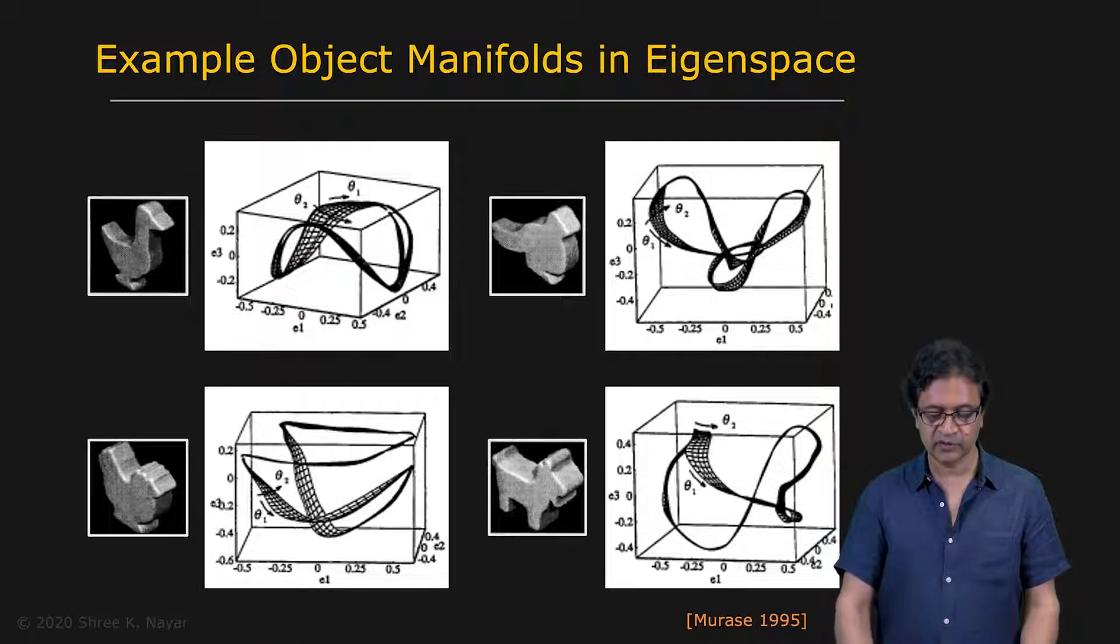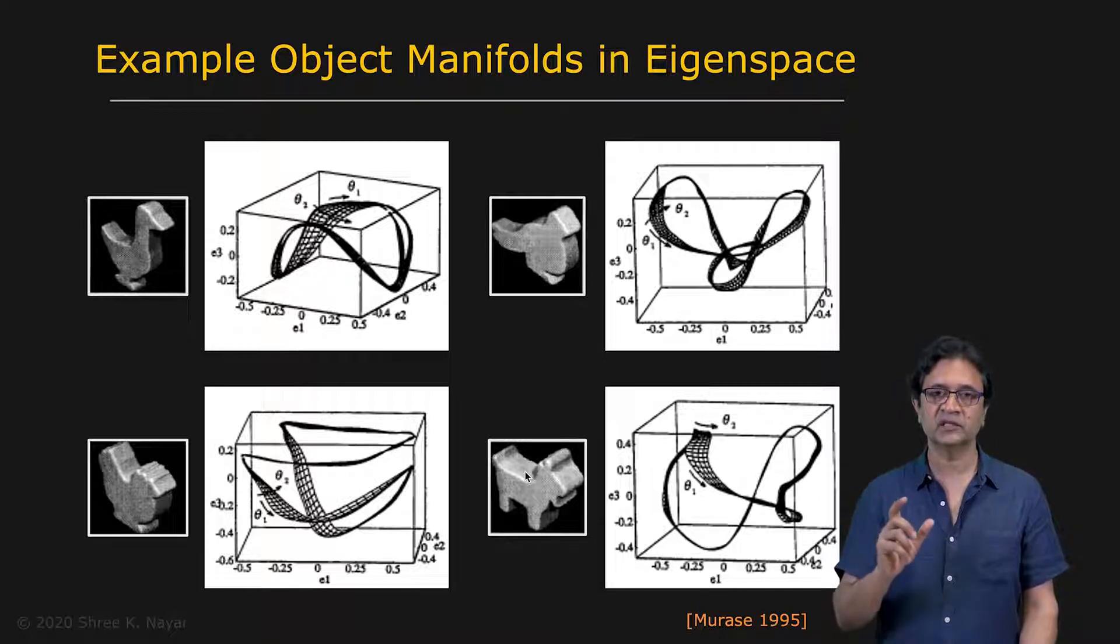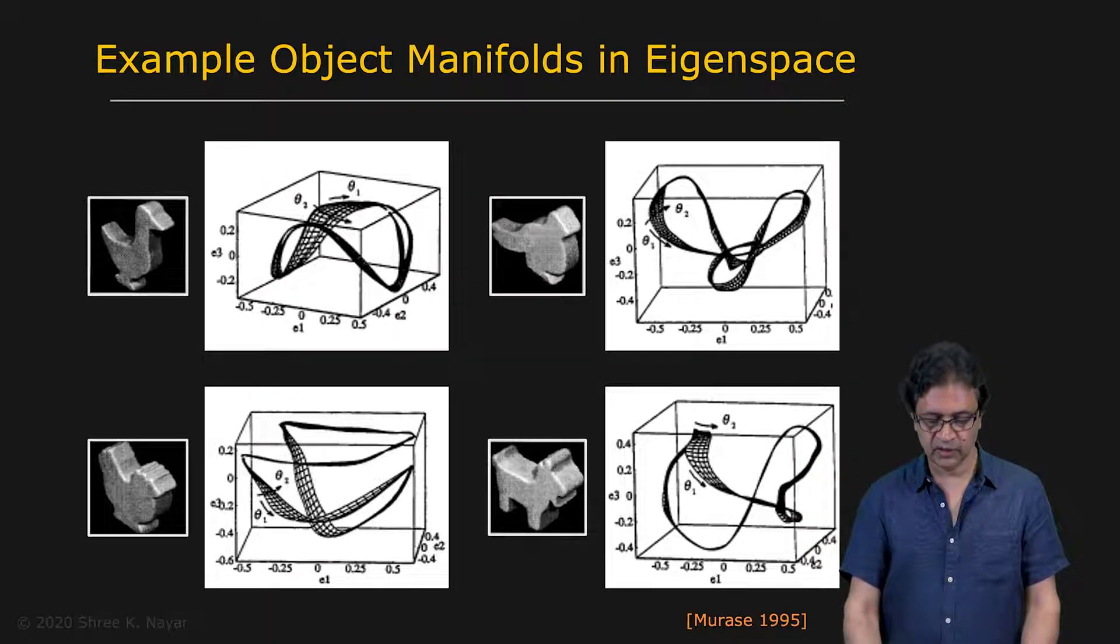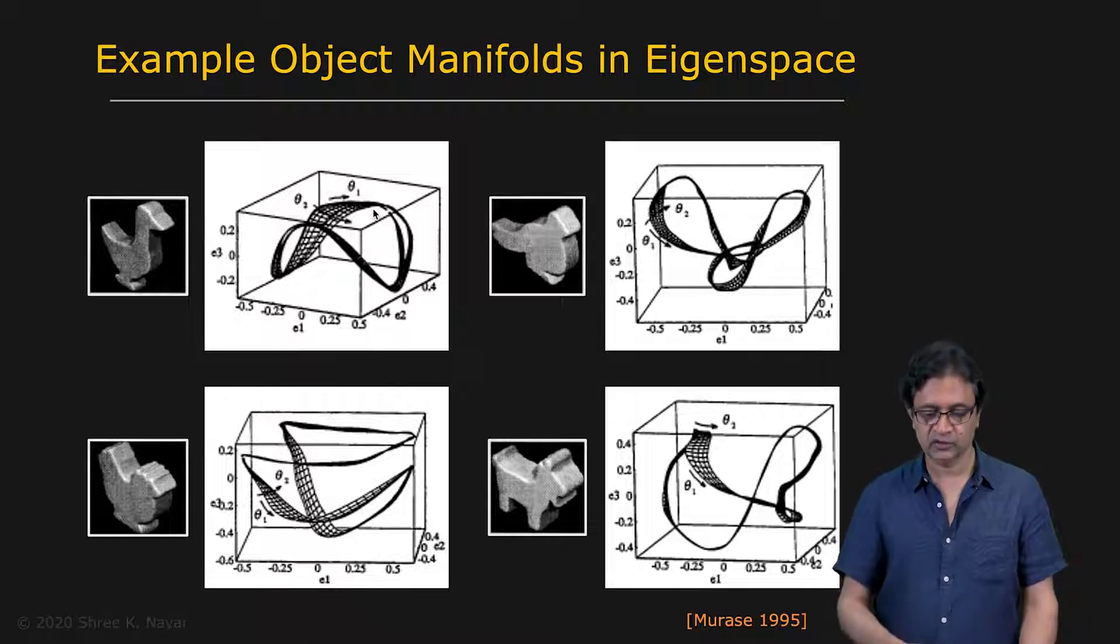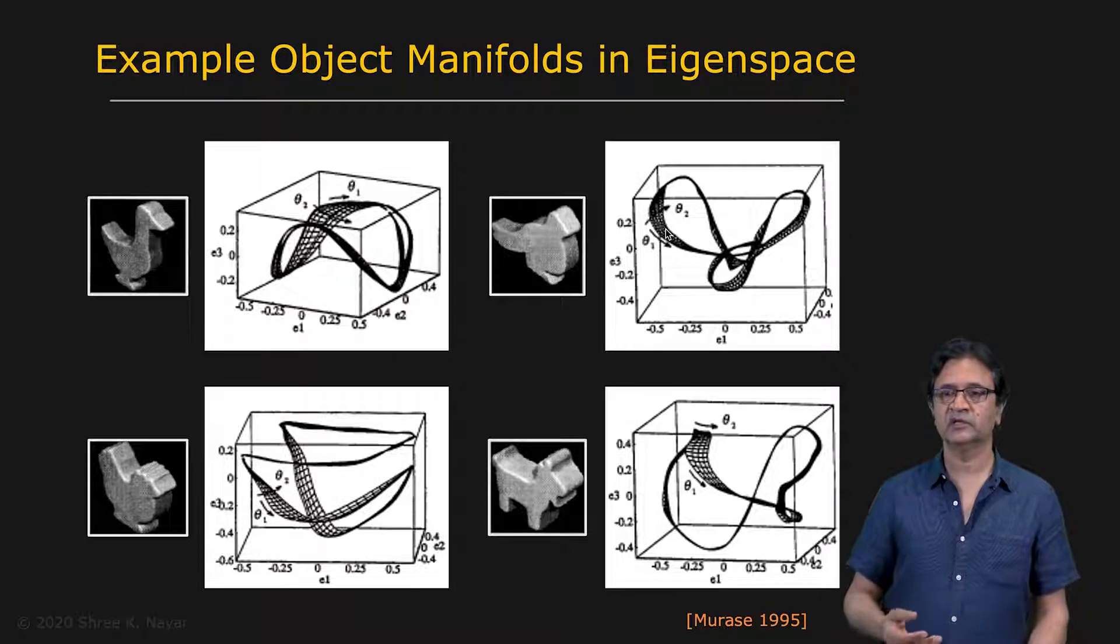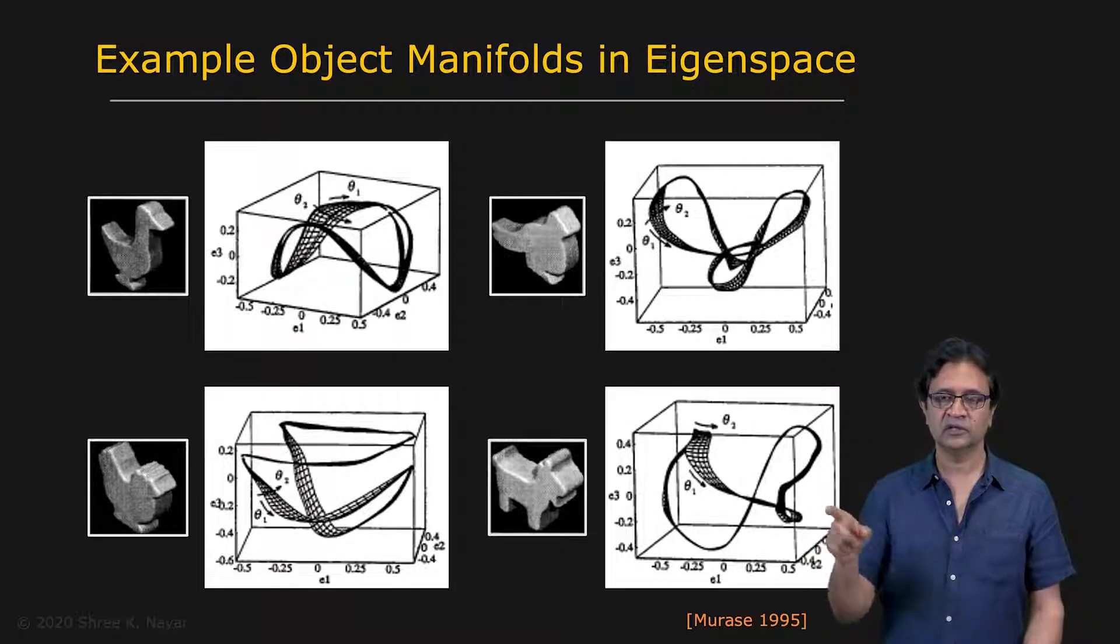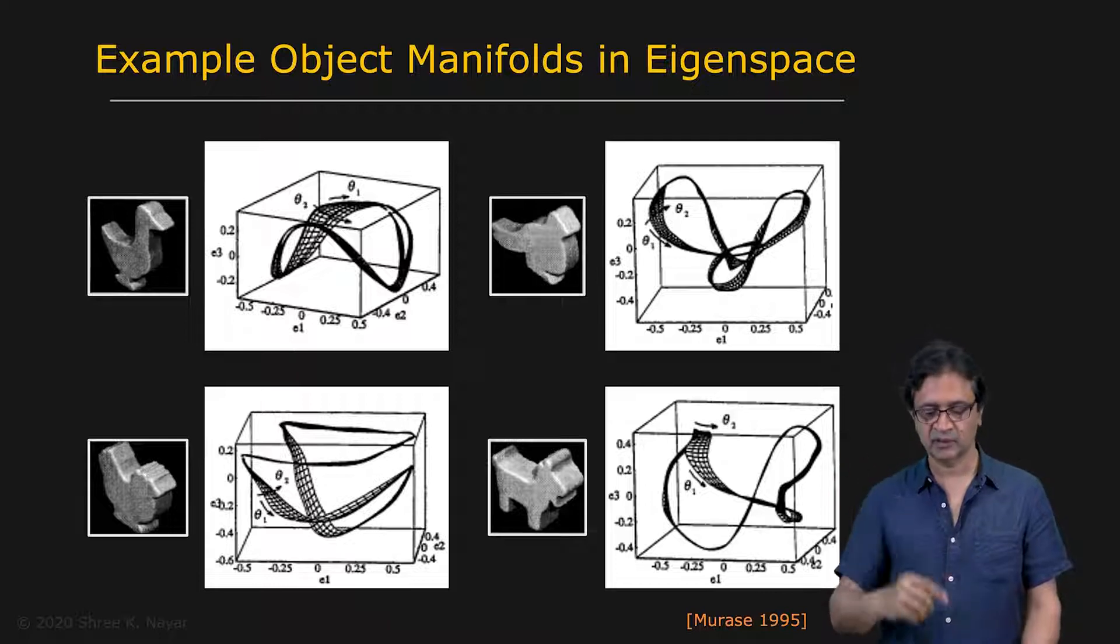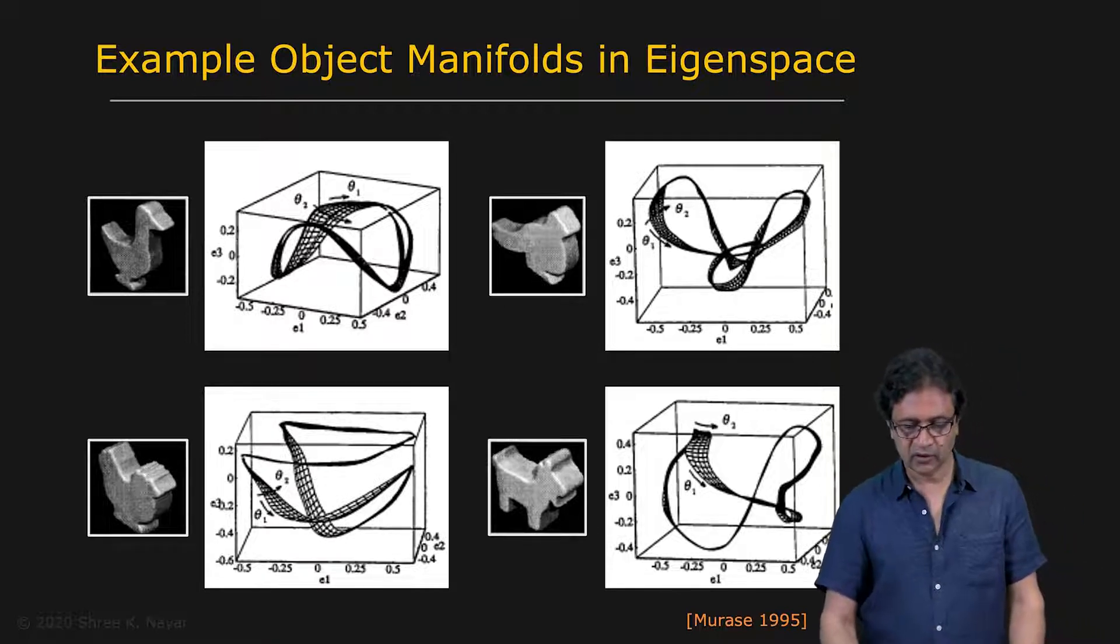Here are a few examples for simple objects. These are four objects. And we have varied two extrinsic parameters here. A single parameter for pose, that's theta one. A single parameter for lighting direction, which is theta two. And so you get these manifolds shown here in three dimensional space just for visualization purposes. But these may be in 20 dimensional space or so. You can see there are interesting shapes and they always come back. They're closed in that they come back to the starting point because we rotate the object about a turntable.